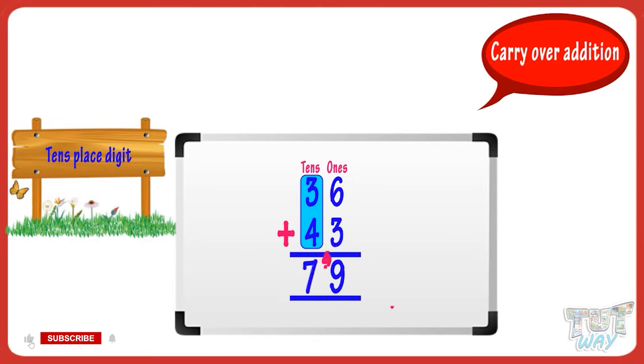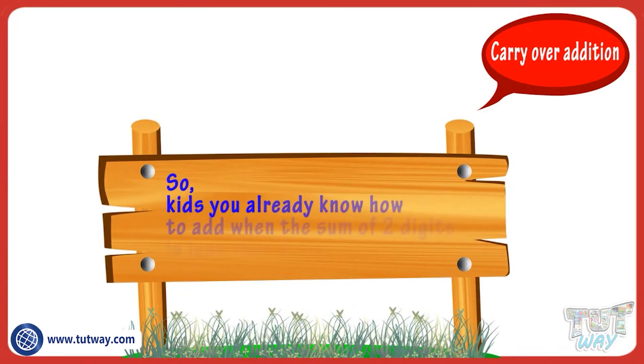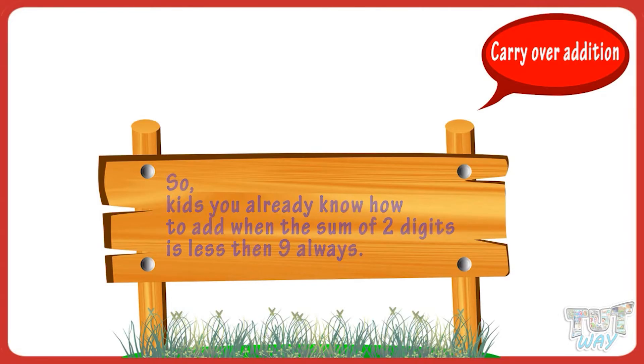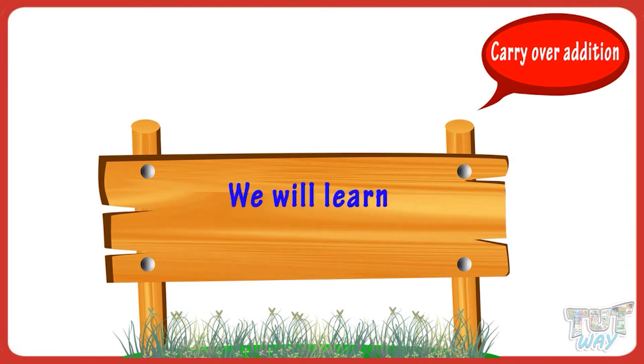Good! We get 36 plus 43 equals 79. So kids, you already know how to add when the sum of two digits is less than nine. Now we will learn more on addition, so let's get started.